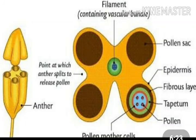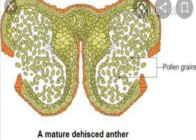The male gametophyte is the pollen grain. The pollen grain has a cover called the sac line.